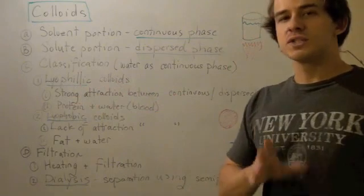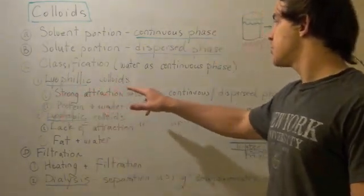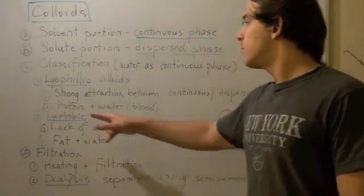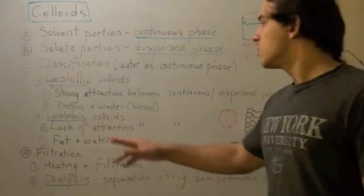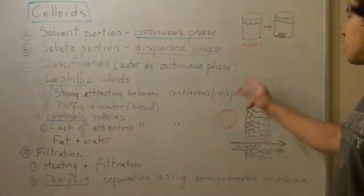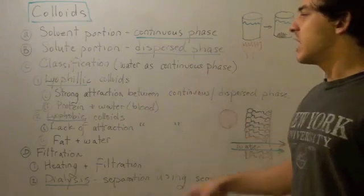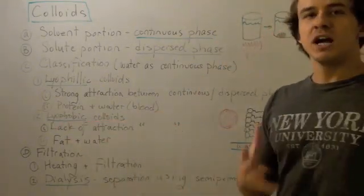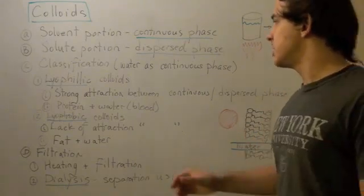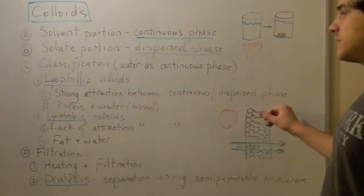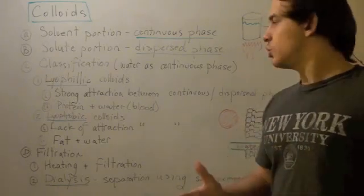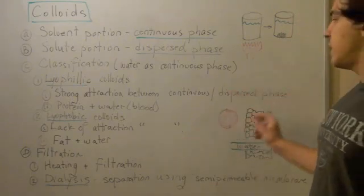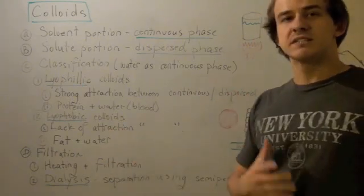Lyophilic colloids are those colloids that have strong attractions between the continuous and dispersed phases. Examples include protein and water, which is found in blood — protein is the dispersed phase, water is the continuous phase, and they mix very well. Lyophobic colloids are those colloids that lack attraction between the continuous and dispersed phases. Examples include fat and water mixtures; fat, the dispersed phase, and water, the continuous phase, don't mix very well.